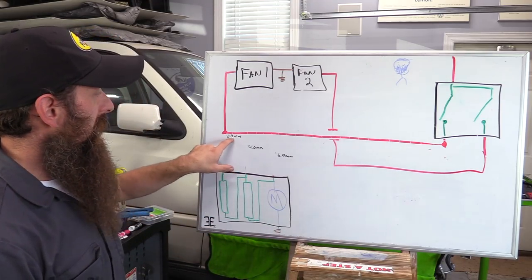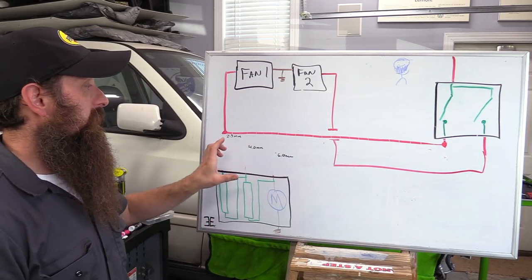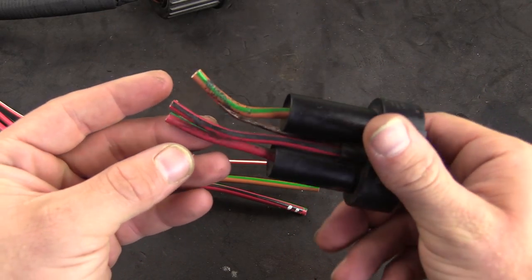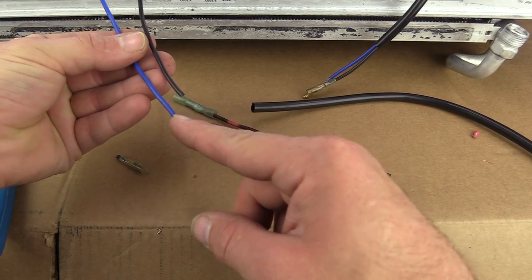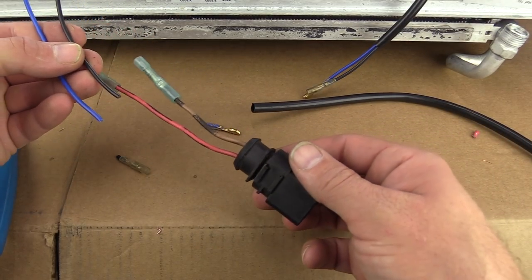On the wiring, you'll notice that I have two and a half, four and six millimeters. These wires coming out of the fan control module are pretty big wires. The wires for the fans that came attached to it were right about in the ballpark of two and a half millimeters.